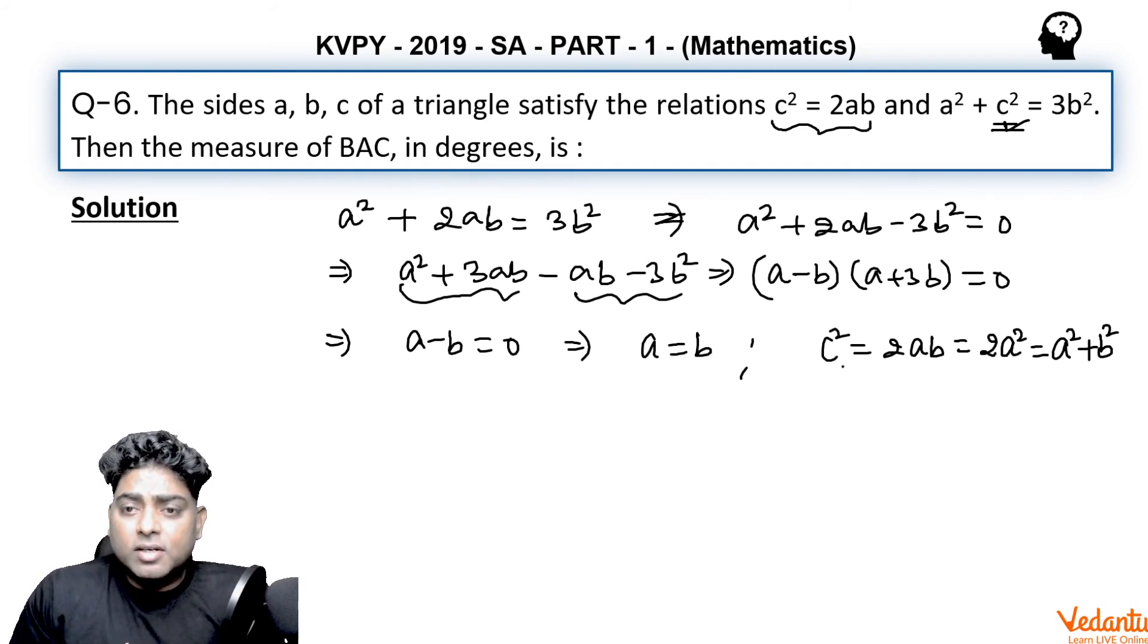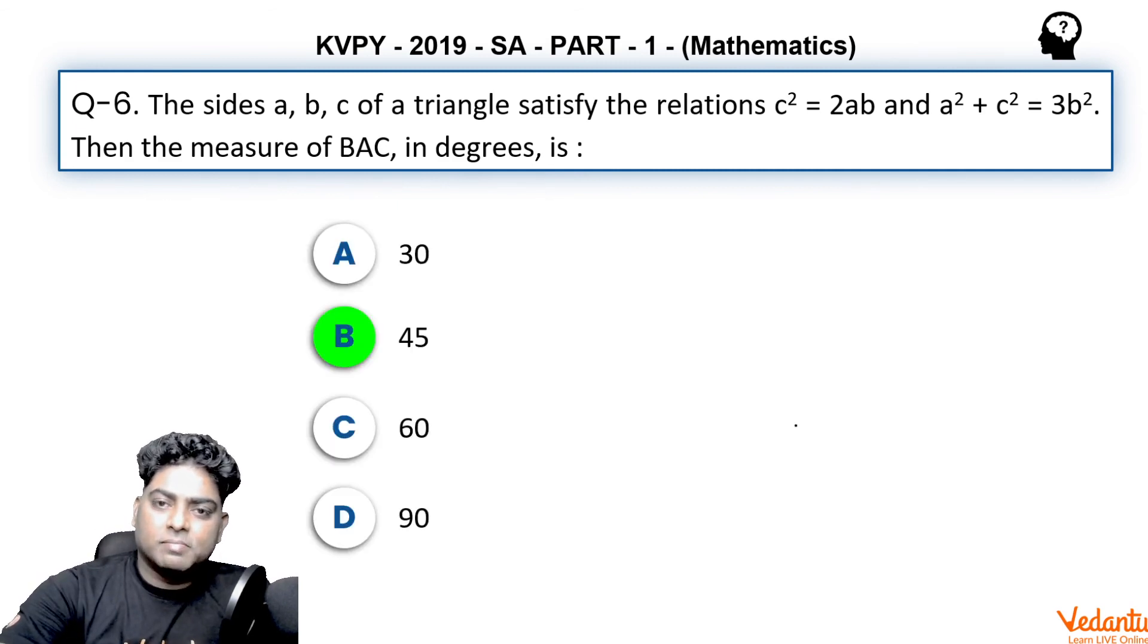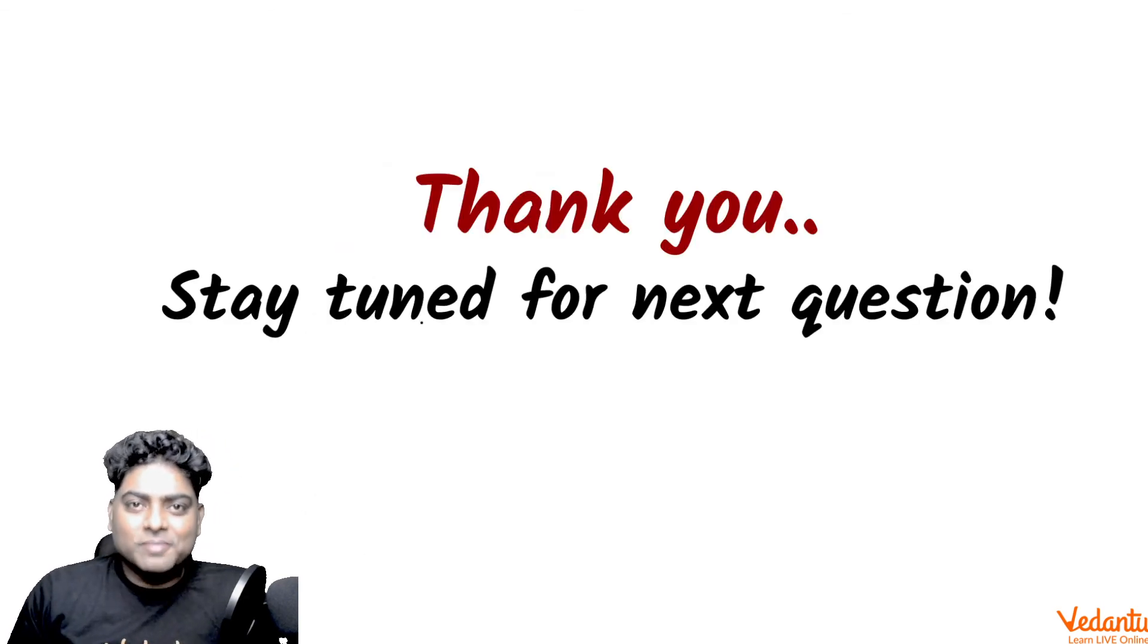Angle C here would be 90 degrees, angle A and angle B would be 45 degrees. So it's a very simple problem, I would say, and I hope you understood it. The answer must be 45 degrees. So stay tuned for the next question. Thank you.